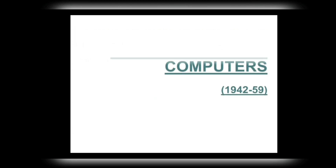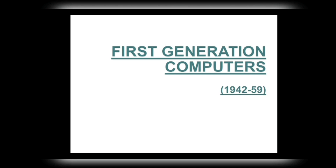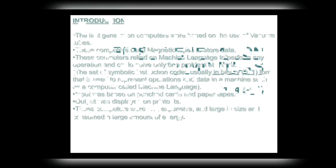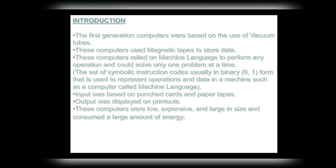Today we will only discuss the first generation of computers. The time period of this generation is from 1942 to 1959. First generation computers were based on the use of vacuum tubes and used magnetic tapes to store data.